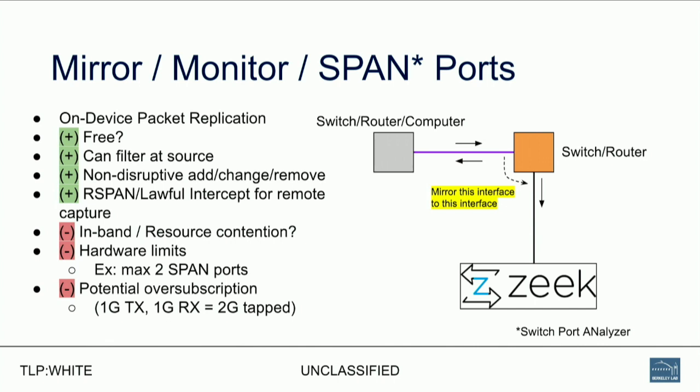You have a switch or a router running something that is copying packets from one interface to another. That has some pros and cons. It's usually free — you can just go and configure it on a switch or router. You can do filtering at the source, so if you only care about SMTP, VoIP, or web traffic, you can apply a filter and not worry about sending it to your Zeek nodes. It's also generally non-disruptive to configure.